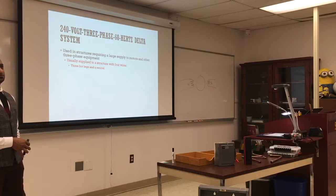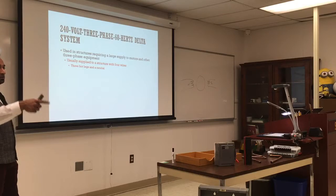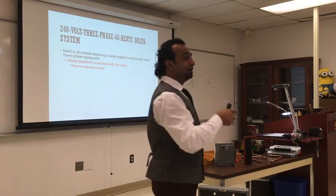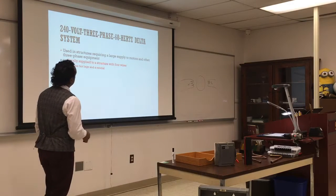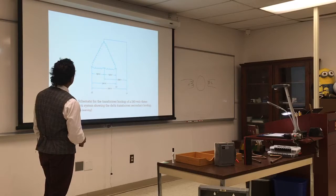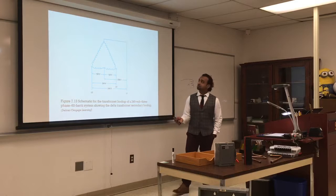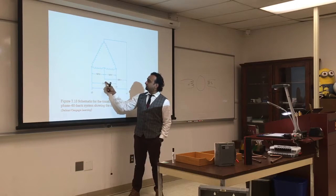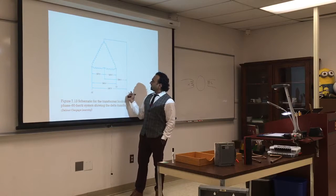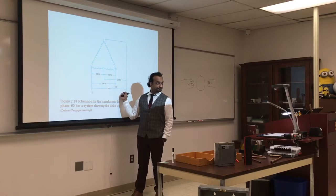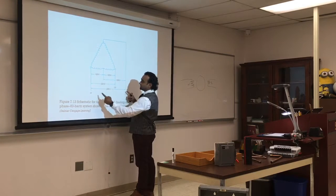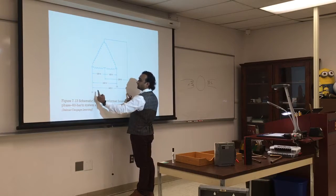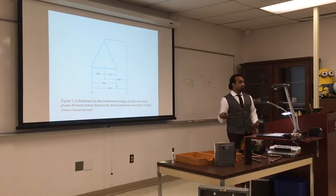What does a delta system mean? What do you think it looks like? Triangle — delta is the Greek word for triangle. The delta system is going to be triangular. It supplies a lot of power with three hot legs and a neutral. Between each two legs is 120 volts, and 240 between them — it's very versatile. The two lines are all hot; between them it is 240 volts. If you go between one line and the other legs, it's going to be 208 volts. So you can get various voltages from the configuration.